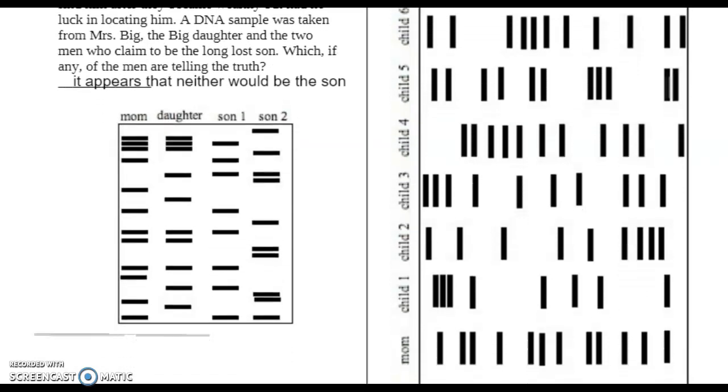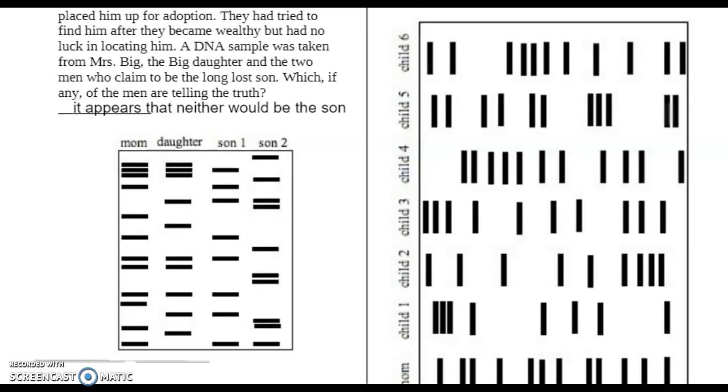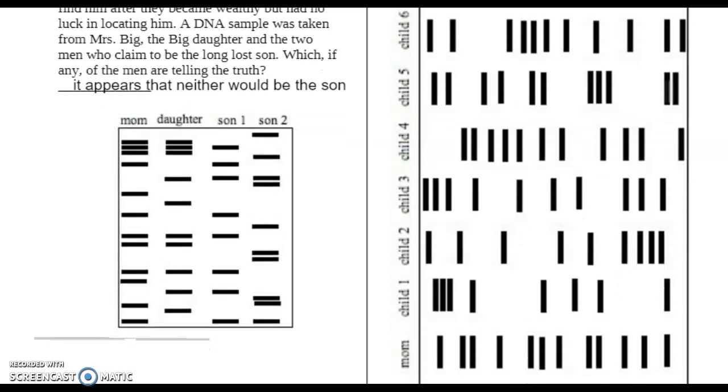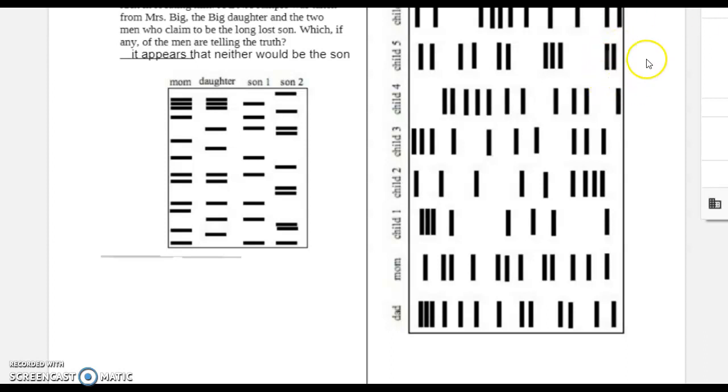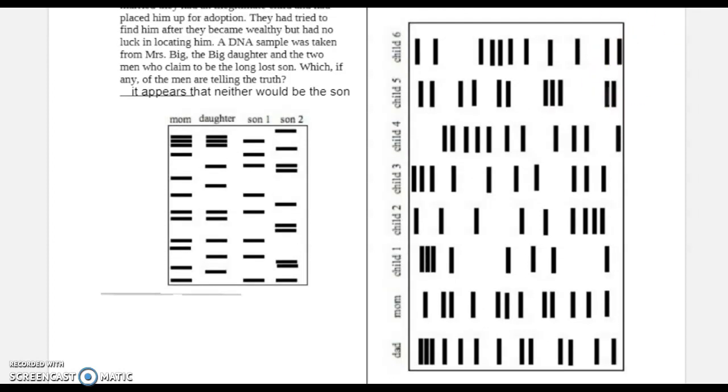I'll shrink it just a little bit so we can look at all at the same time. Let it make it a little easier. So child 1 might be a match. Child 3 has already got a band that didn't come from either one. Child 2 also. Child 2 and child 3 both have that band up there that neither one of the parents appear to have. And child 6 as well. So let's look at 4 and 5.